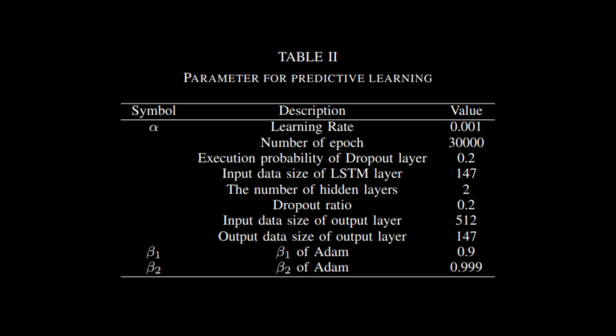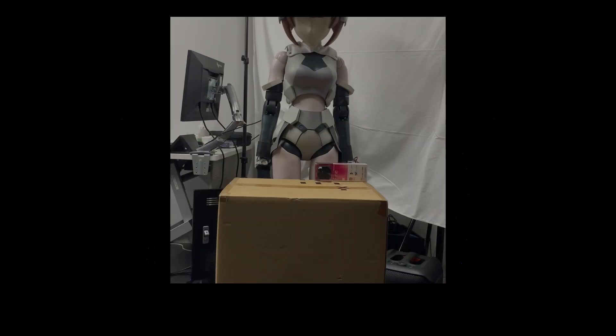This table outlines the parameters used for predictive learning. To generate motion, the initial frame data is input into the prediction model, which then generates motion for 200 frames. In Unity 3D, this prediction can be triggered by a simple action, like pressing a key on the keyboard.